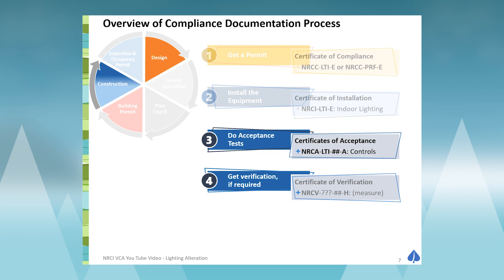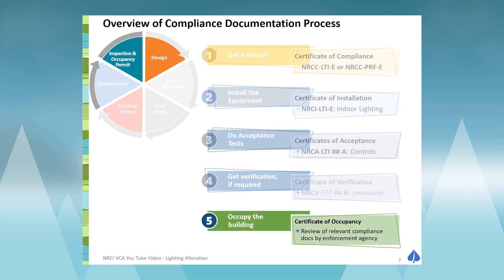The Certificate of Acceptance Forms are produced by the Certified Acceptance Test Technician, who does functional testing of the lighting controls as dictated by the Energy Code. Only a Certified Acceptance Test Technician can provide those forms for indoor lighting projects. Certificate of Verification Forms are for HERS measures, and there are no HERS measures for lighting alteration projects.